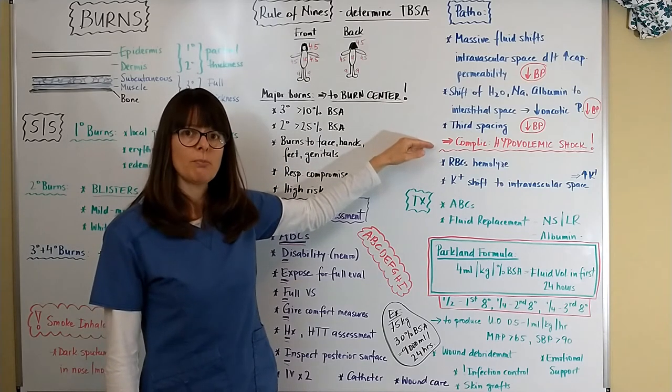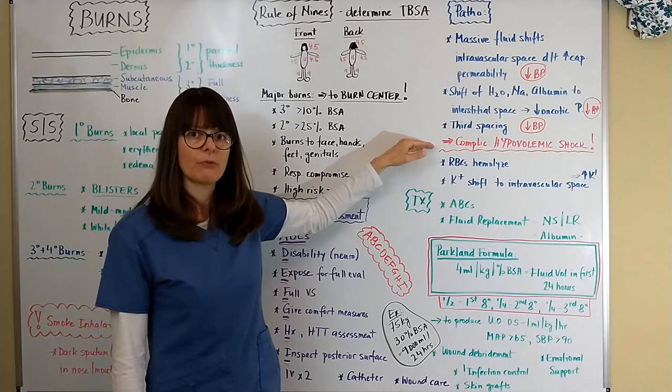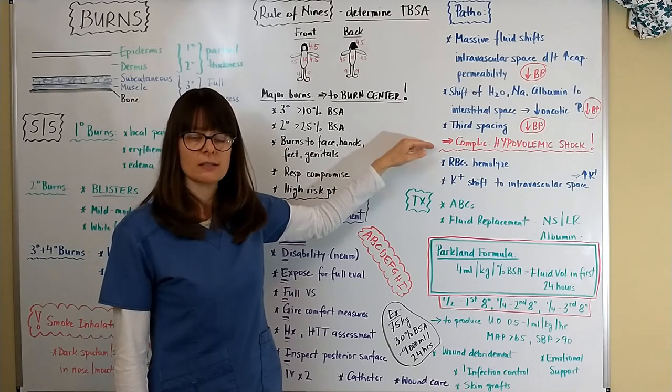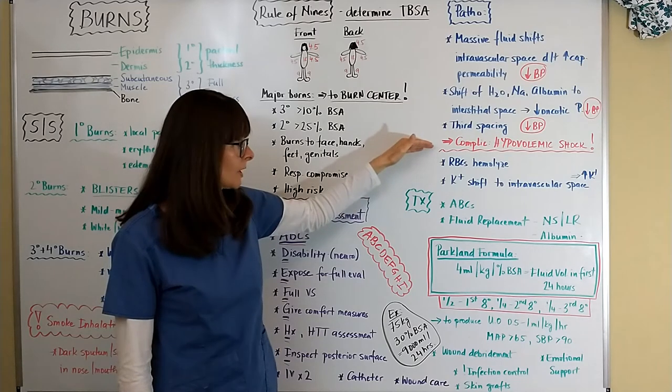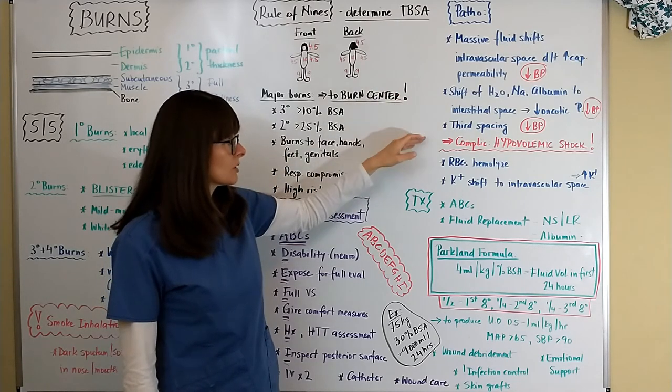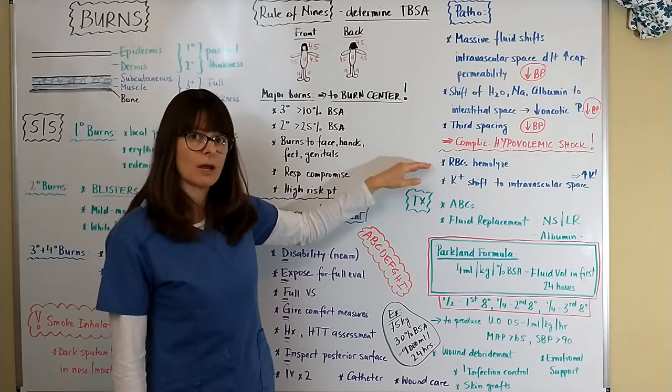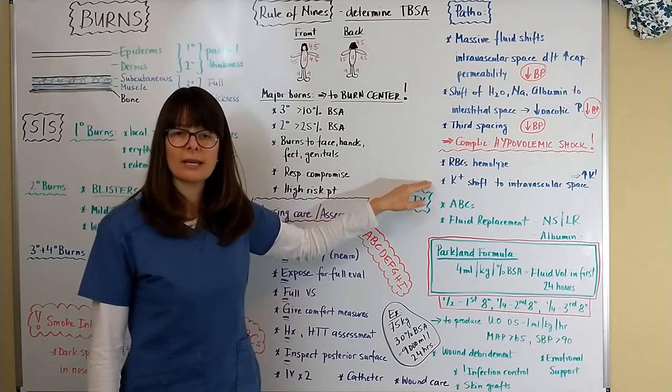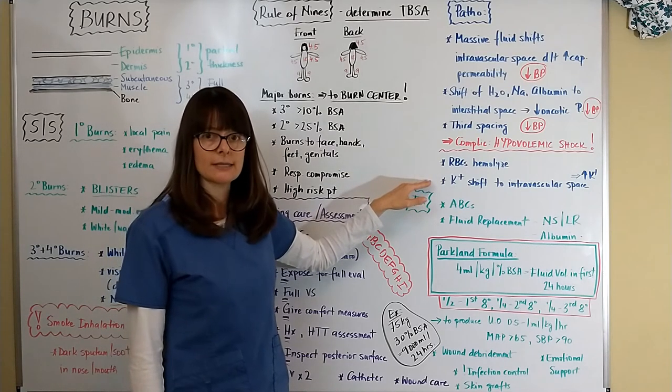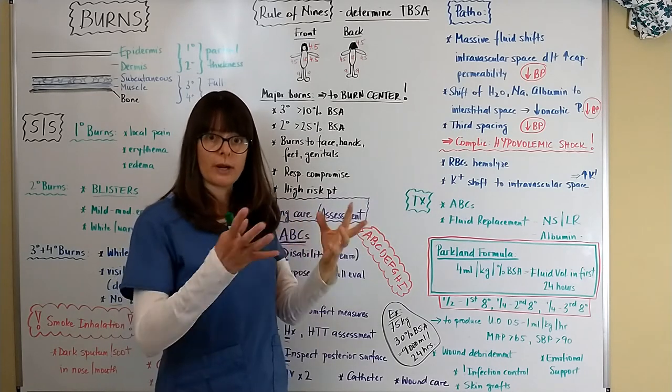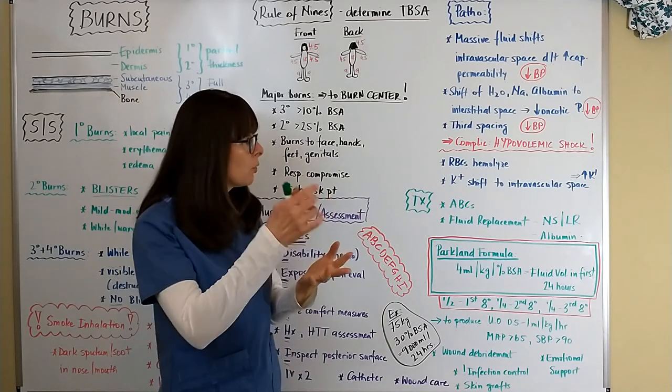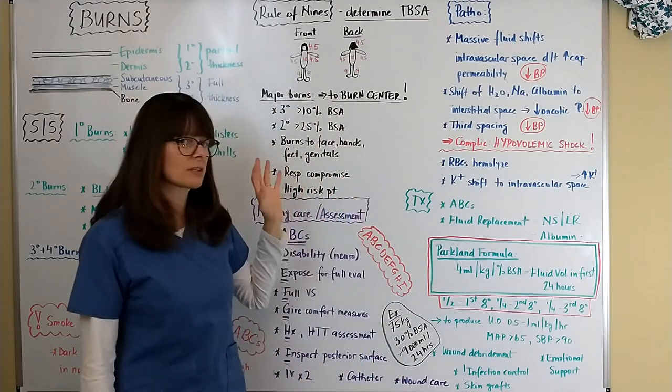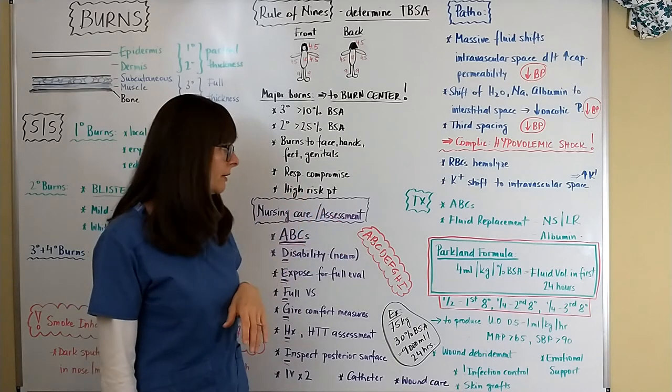In addition to this hypovolemia, red blood cells hemolyze because they're being destroyed from the burn. Potassium that is usually an intracellular electrolyte, when the cells are being destroyed, they're being hemolyzed, the potassium moves into the intravascular space and can cause hyperkalemia. So these patients are very critically ill.